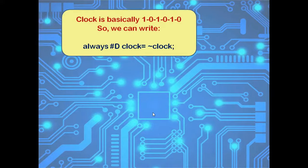So, how will you start? Clock is basically 1010 bit streams. Its value gets toggled every time. So, we write in Verilog always #D clock = ~clock.